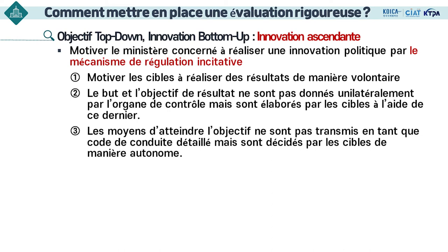Ce mécanisme s'appelle le top-down target, bottom-up innovation — en français, la distribution de l'objectif descendante et l'innovation ascendante. La distribution de l'objectif se fait de haut en bas et l'innovation se produit de bas en haut. Ce mécanisme permet de réaliser le top-down target, bottom-up innovation, où les ministères expérimentent un apprentissage innovant pour trouver les moyens les plus efficaces afin d'atteindre les objectifs assignés. Par conséquent, les ministères ont une motivation volontaire d'établir une bonne politique en effectuant une auto-évaluation. Il est important que l'innovation se produise toute seule à travers l'incentive regulation mechanism.